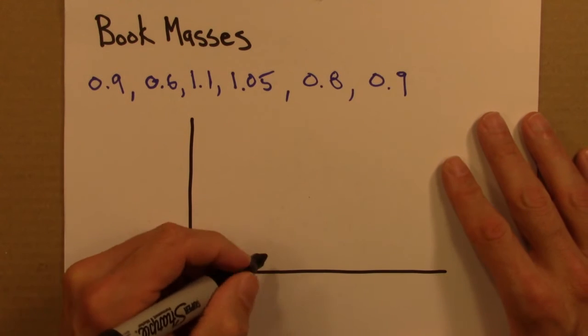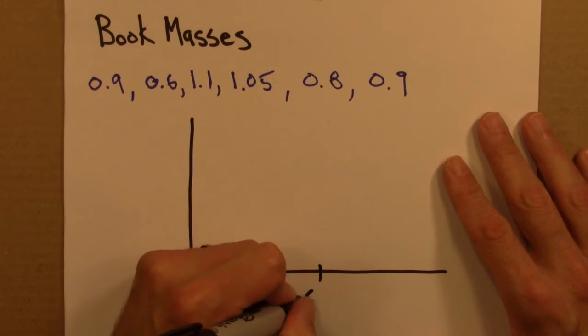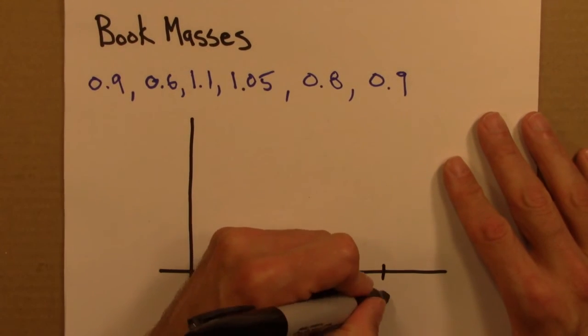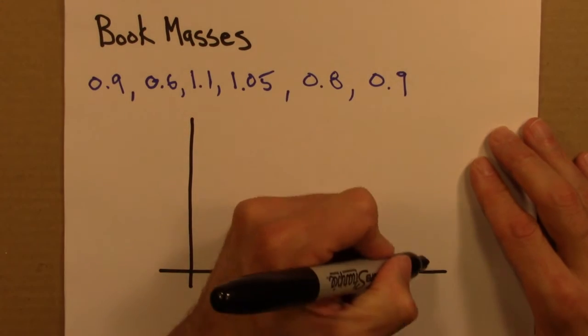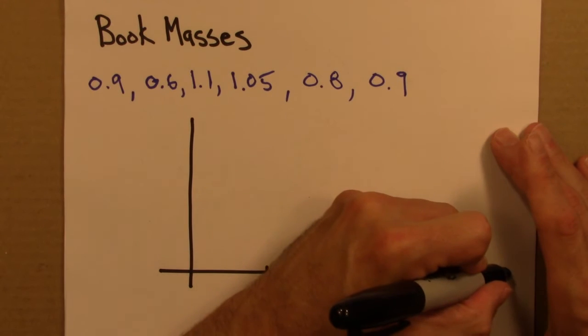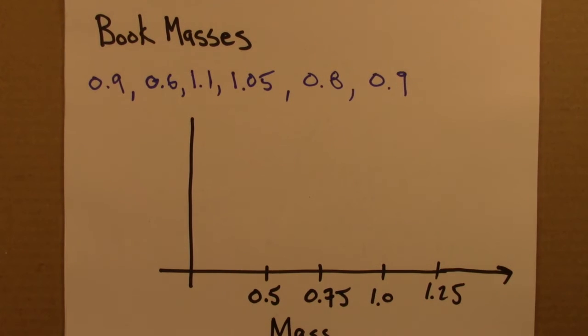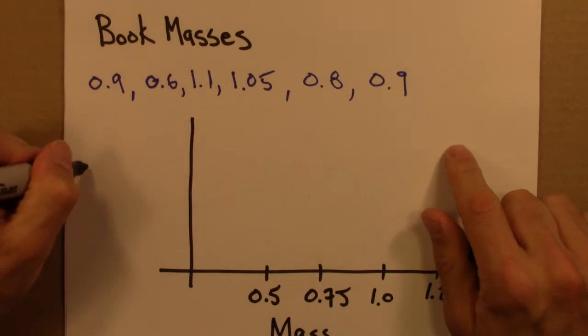Let's see here. I'll do 0.5, 0.75, 1.0, and 1.25. So this is going to be my mass. And then I'll have frequency here.